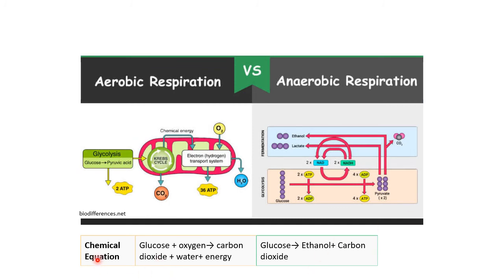The chemical equation for aerobic respiration is: glucose plus oxygen gives carbon dioxide, water, and energy. In anaerobic respiration, glucose gives ethanol and carbon dioxide. You can see that glucose follows glycolysis and then enters fermentation, where lactate or lactic acid, ethanol, and CO2 are given out. In aerobic respiration, glycolysis, the Krebs cycle, and the electron transport chain give out 38 ATPs, CO2, and water. ATPs represent the energy liberated.